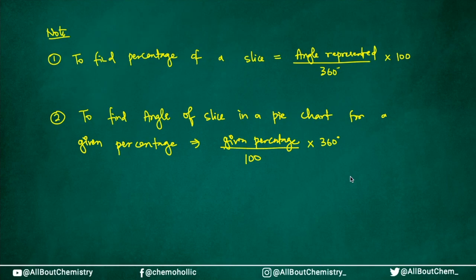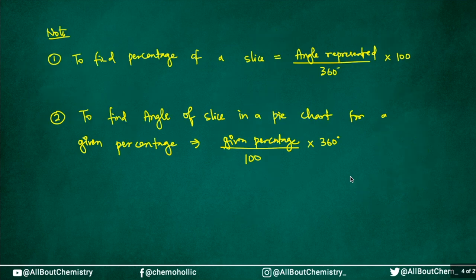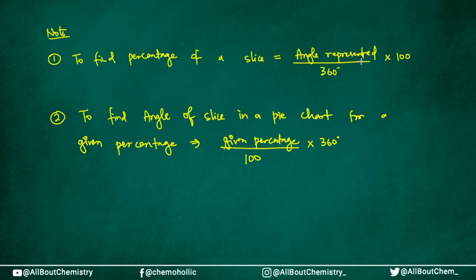If you don't want to use all these shortcut tricks, these are the basic formulas. To find the percentage of a slice, if you are given an angle and need to find the percentage of that region, you divide the given angle by 360 degrees and multiply by 100. That gives you the answer in percentage.